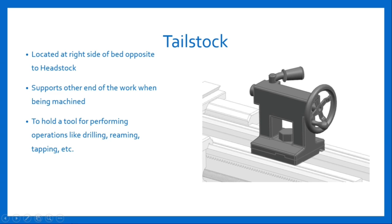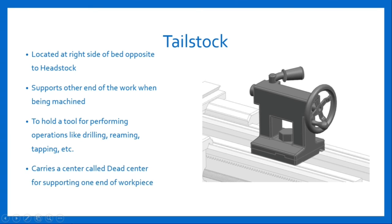It is primarily for giving an outer bearing support for work being turned on center. It can be adjusted for alignment and non-alignment with respect to spindle center, and carries a center called dead center for supporting one end of the work. The body of tailstock is adjustable on base which is mounted on guideways of bed and can be moved.